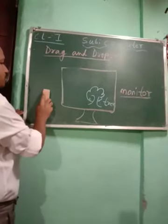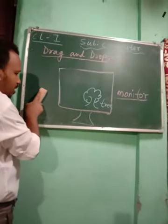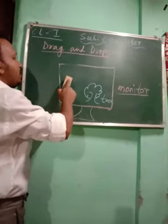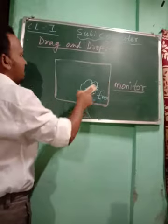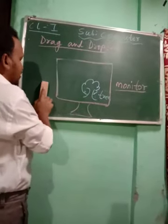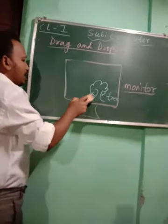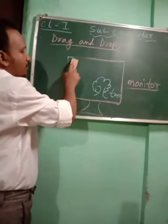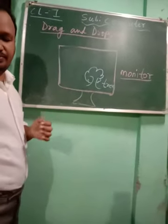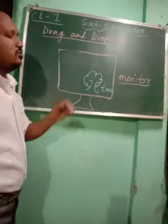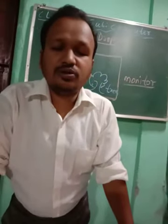First you will select with your left mouse button, then press the left mouse button and don't leave your finger. Slowly you move the mouse — when you move the mouse, this picture, the tree, will also move. Wherever you want to bring it on the monitor screen, you bring it there and then you drop it. Slowly you leave your finger. When you come here and leave your finger, it will move from the top left corner to the right corner — that is how drag and drop works.